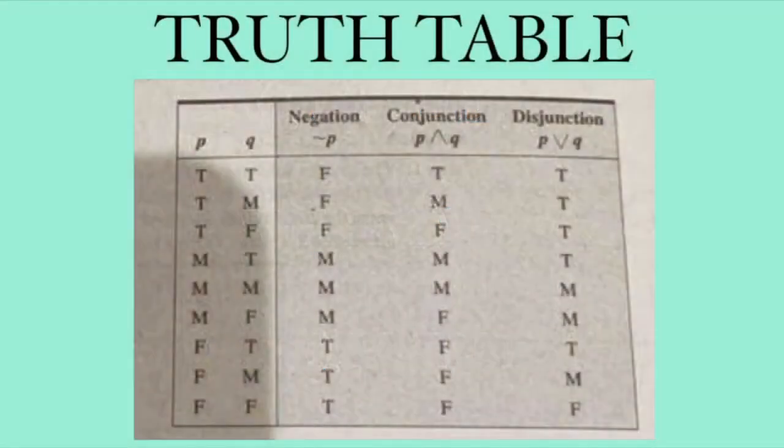What I have right now is an example of a truth table. It shows the truth values for negation, conjunction, and disjunction in this three-valued logic.